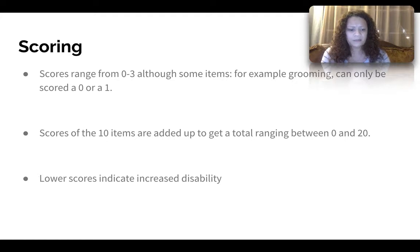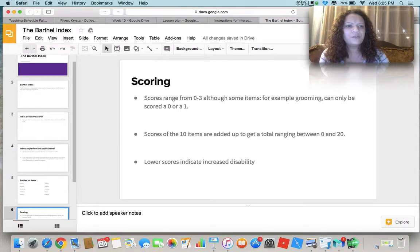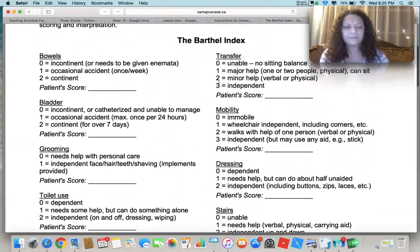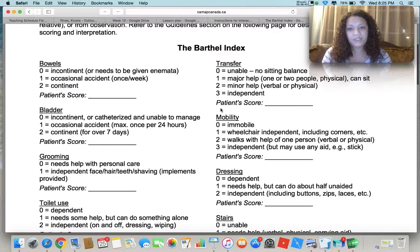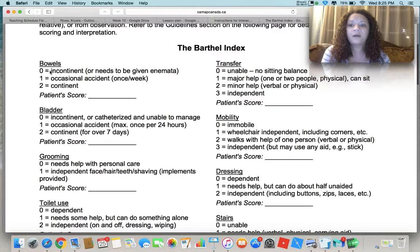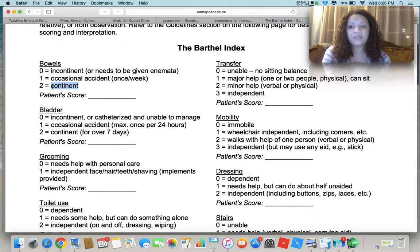I recommend familiarizing yourself with the Barthel score sheet, which I've provided. When you come to class on Monday, we'll jump right in with a video of an OT and a patient, and you'll score right along with what the patient tells you about herself. Looking at bowels: score a 0 if incontinent or needs an enema, score a 1 for an occasional accident (once a week), and score a 2 if completely continent.